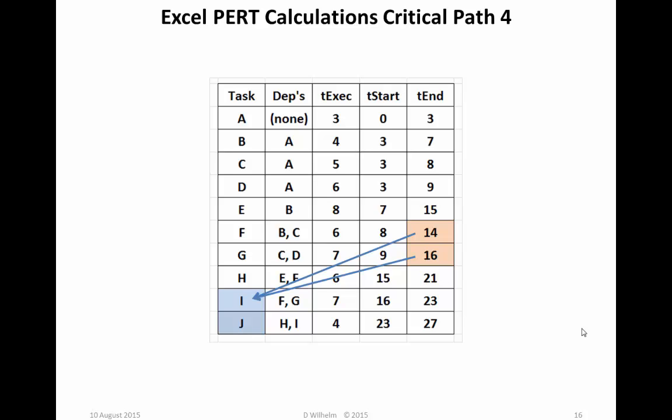Task I's dependencies are F and G. Task G, time end is 16. Task F, time end is 14. So task G is also on the critical path. Task G's dependencies are C and D. Time end for D is 9. So task D is also on the critical path. Task D is dependent only on A. So A is also on the critical path. So our critical path is A, D, G, I, J. And if we click back to the pictorial version, it agrees. So that's always a bit of a relief when something new agrees with something we have done previously.